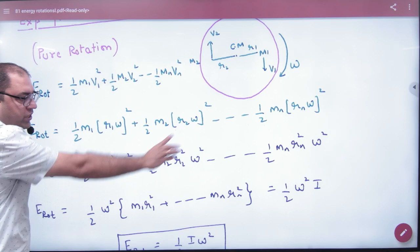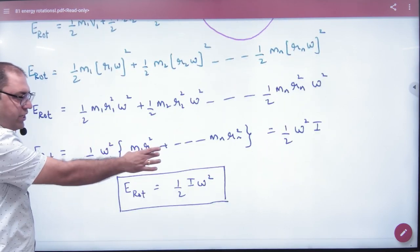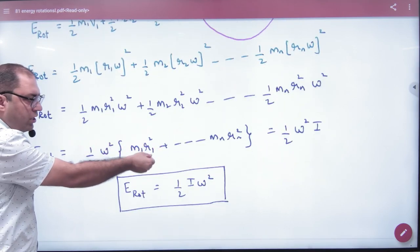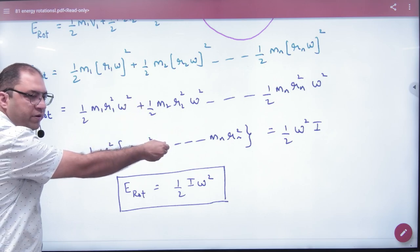If we open this term and take half omega squared, this term will come: m1 r1 squared, m2 r2 squared, up to mn rn squared. What is this? The moment of inertia, I.